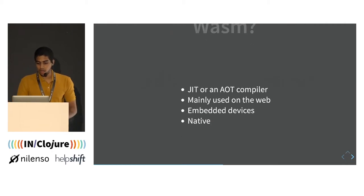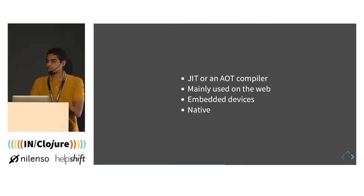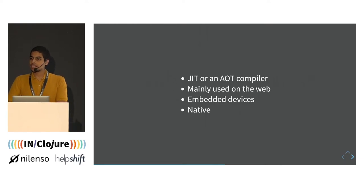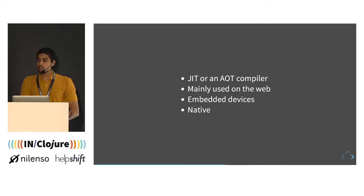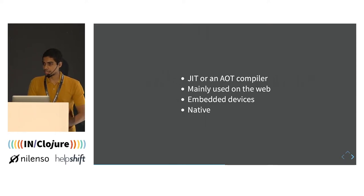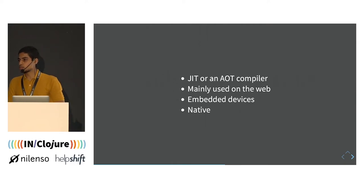Where can you run Wasm and how does it execute? Wasm can be JIT-compiled to native machine code before running, or it can be interpreted. The main use of Wasm is on the web. Wasm can also be used on embedded devices — currently it doesn't have a garbage collector, though that may change — and you can also build native apps with Wasm.